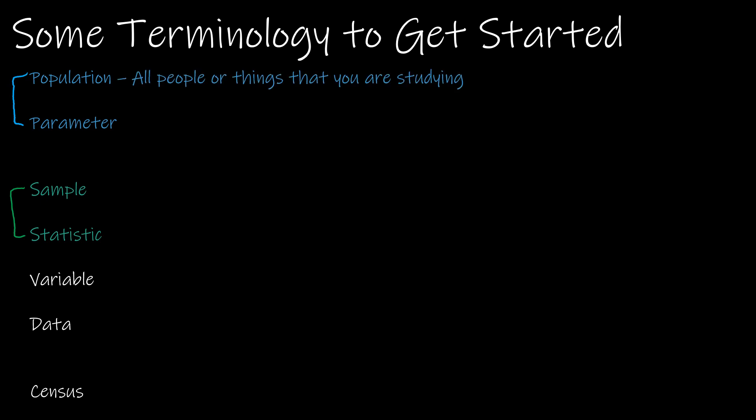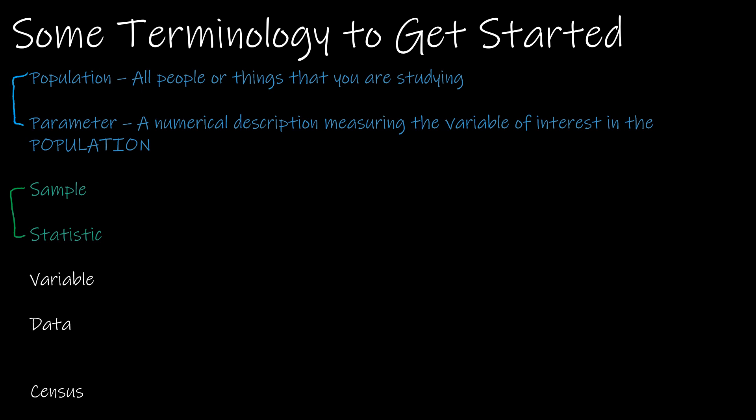A population is the entire body of things that we are studying. So if we were studying students at Bellevue University, that would be the population. Whatever we're studying about those students — say GPA or marital status — is called a parameter. It's a numerical description that measures whatever variable we are studying.